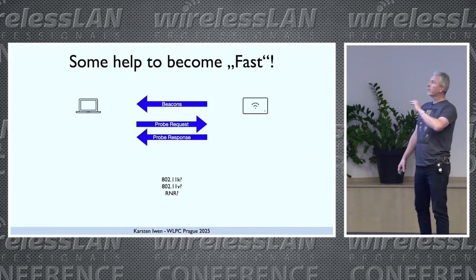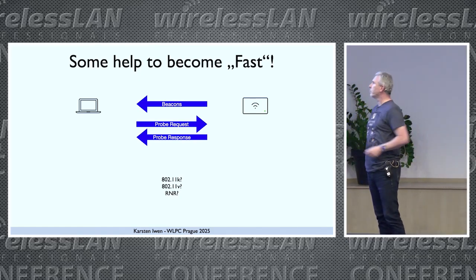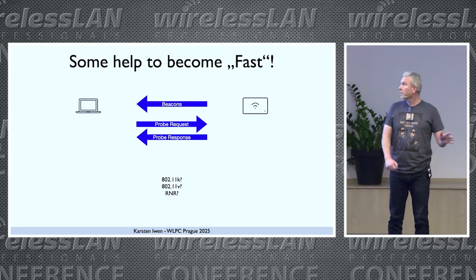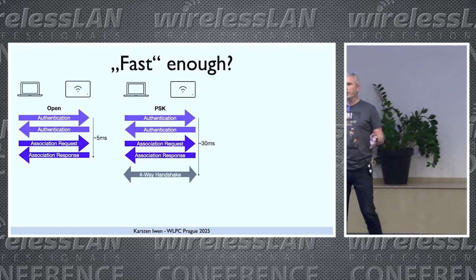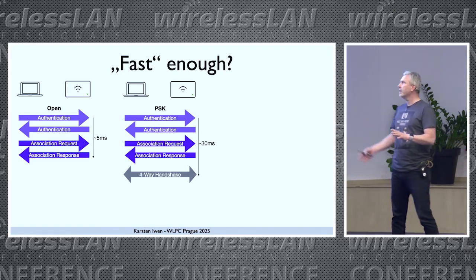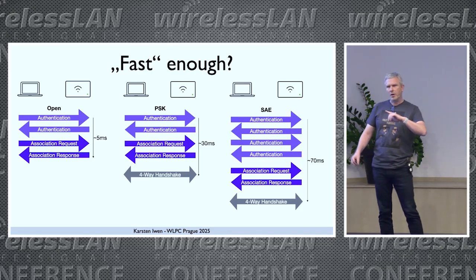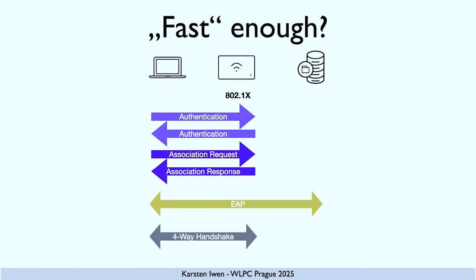Before our client roams, it has to decide to roam. We have some technologies to improve that — very important, but not part of this talk. If we are using open networks or PSK-based networks, it's already fast enough; we don't need any optimization. Starting with SAE, we have this cryptographic computation at the beginning — we might think about improving it. But we definitely need something with 802.1x.